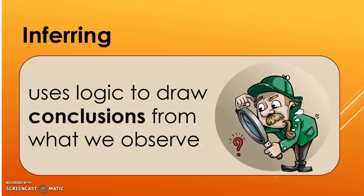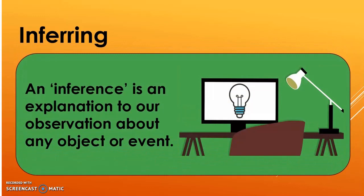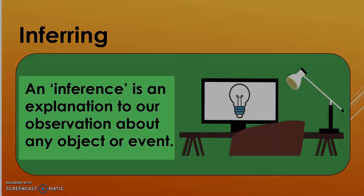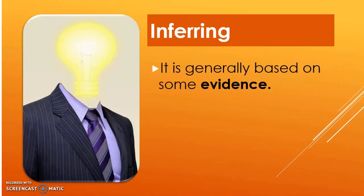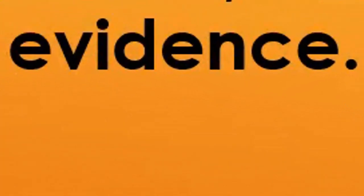Observation is different from inferring in the sense that whatever we observe, we infer something about it by using logic. The third very important characteristic of inferring skill is that inference is an explanation of our observation about an object or event. Observation is merely collection of data or fact, and when you explain the reason — using logic, past experiences, and understanding — you draw inferences.